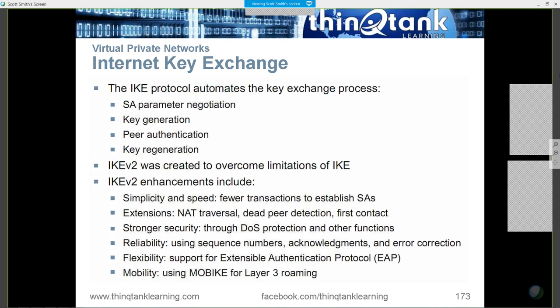IKE 2 does all the same things that IKE 1 did, but it's faster. It has dead peer detection, so we can identify when a VPN peer is no longer accessible. It has stronger security through denial-of-service protection mechanisms. And it supports mobile key exchange — Layer 3 roaming, moving from one subnet to another while still allowing you to maintain VPN integrity.